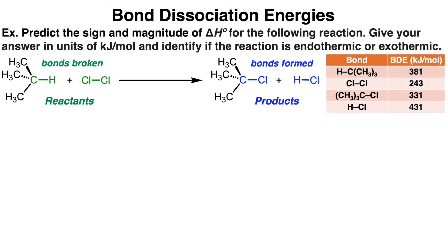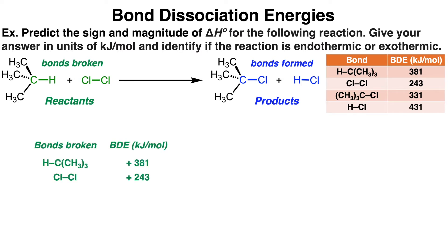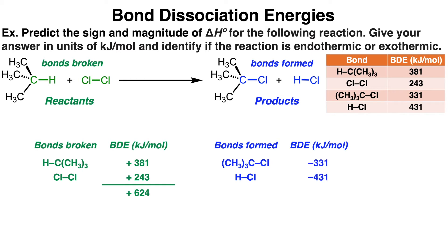Predict the sign and magnitude of delta H0 for the following reaction using the BDE values from the table on the right. Give your answer in units of kilojoules per mole and identify if the reaction is endothermic or exothermic. First, let's add up the total bond dissociation energies of the reactants in green. The cost of a carbon-hydrogen bond breaking is 381 kJ/mol, and the cost of a chlorine-chlorine bond breaking is 243 kJ/mol, giving a total of 624 kJ/mol for the reactants.